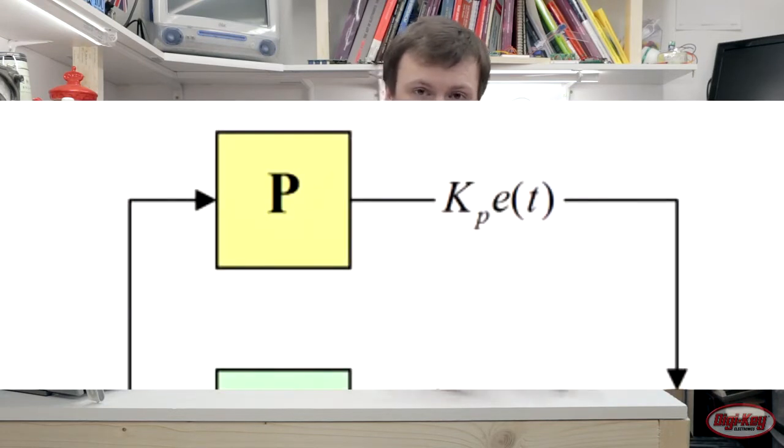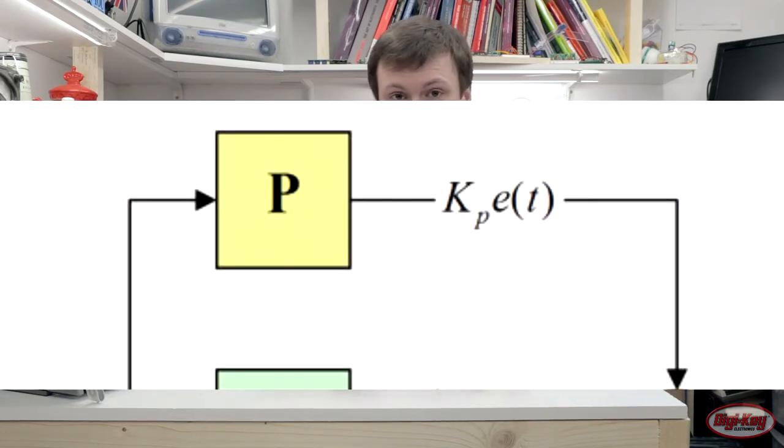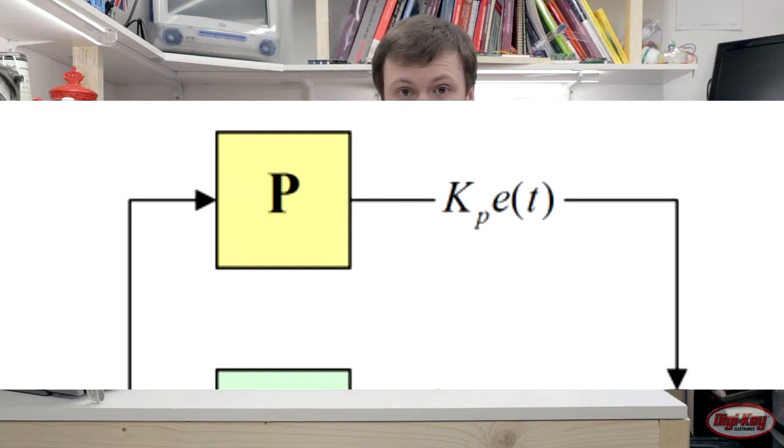The proportional block will multiply this error by some factor to give you a proportional figure — essentially, how much is the error right now?